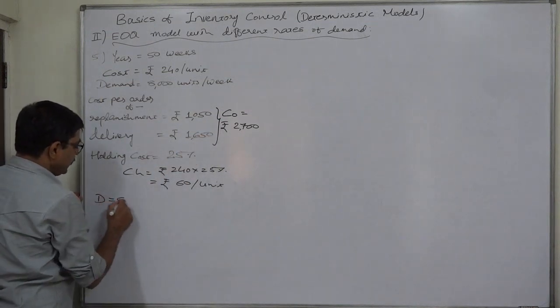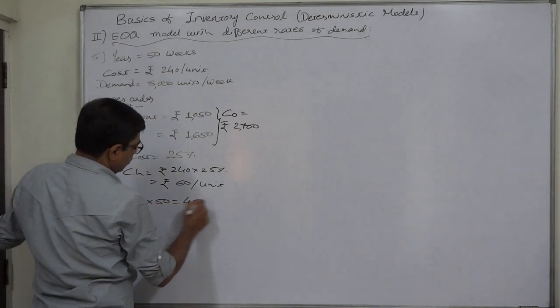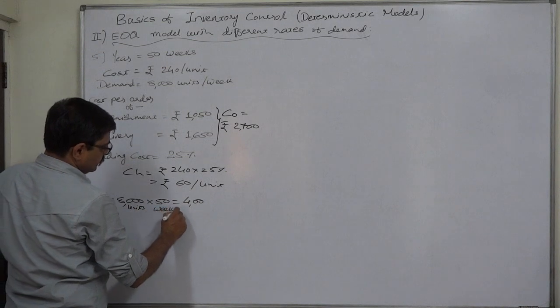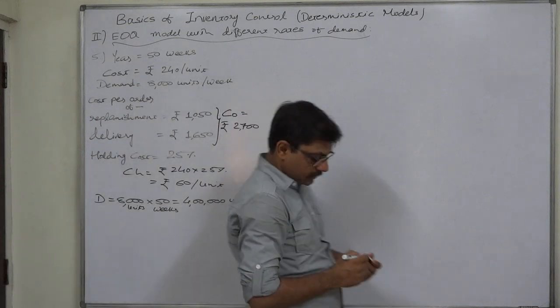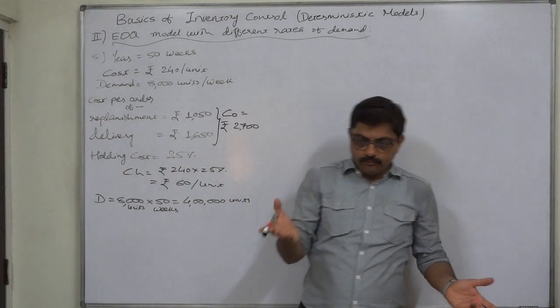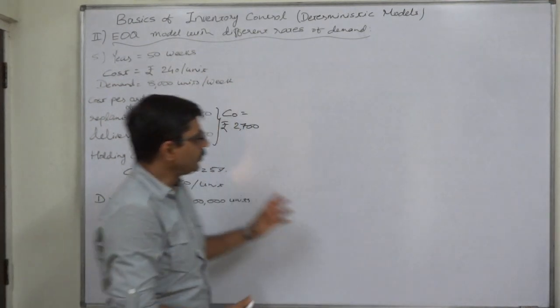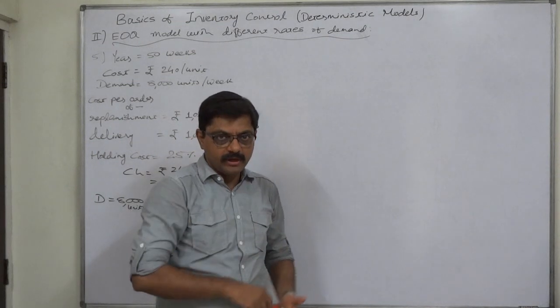Now we have all three information: CO, CH, and D will be 8,000 units into 50 weeks, so 4 lakh or 400,000 units. That is our D. We need to make all calculations which are part of inventory policy and also need to calculate gross profit in this question.